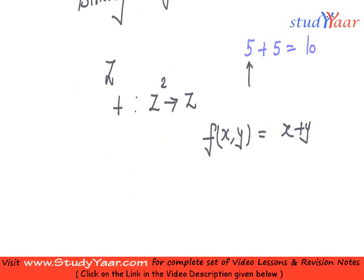Over here your x is equal to 5, your y is equal to 5. And even your 10 belongs to your Z. So, this is a binary operation.